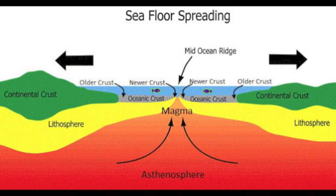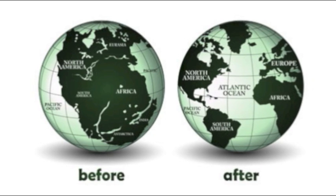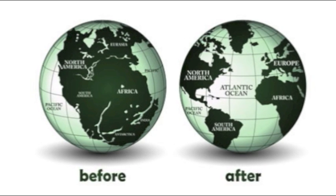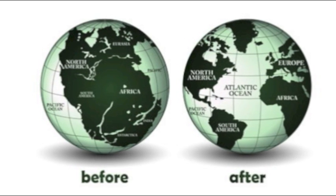As new oceanic crust is formed, old oceanic crust is pushed down into a trench and melts into magma. Harry Hess, after all, clarified the mechanism that broke the once-joined continents into seven.